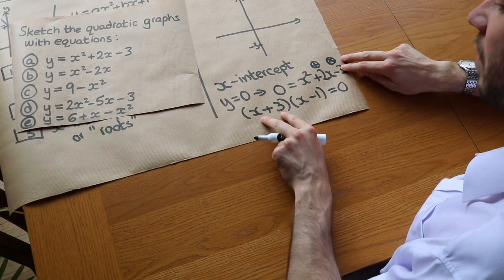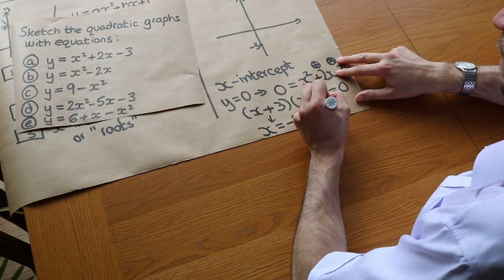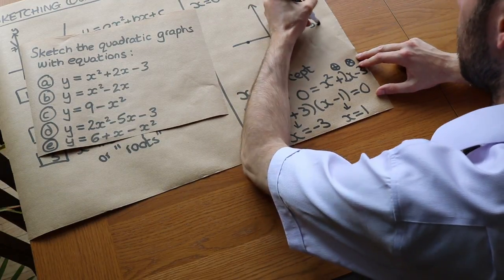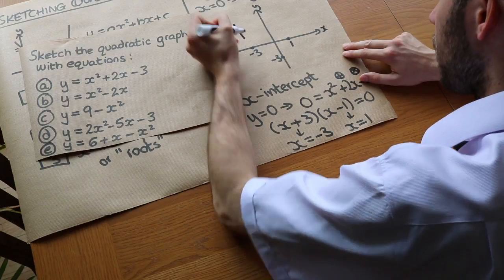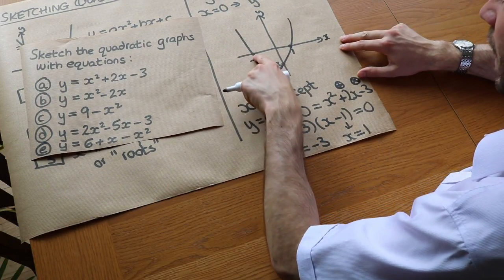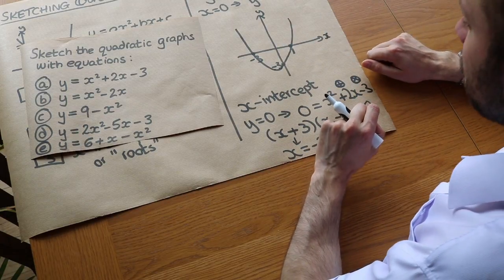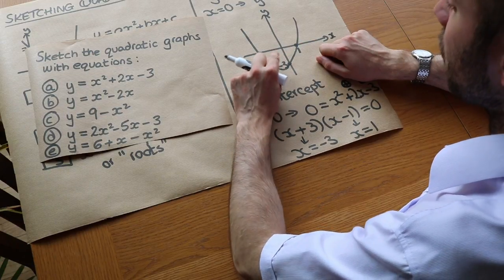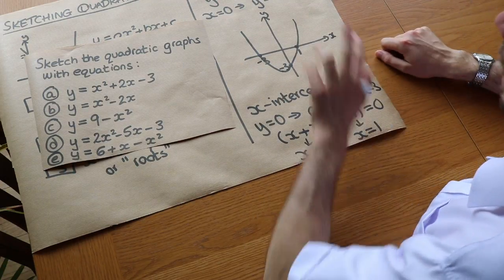We have the product of two things equals 0, so either x plus 3 equals 0, giving x equals minus 3, or x minus 1 equals 0, giving x equals 1. So the x-intercepts are minus 3 and 1. One important note: many students put the minimum point on the y-axis, but because a quadratic graph is symmetrical, the minimum point is halfway between minus 3 and 1, which is minus 1, not 0. Make sure the minimum point of your graph is not on the y-axis.